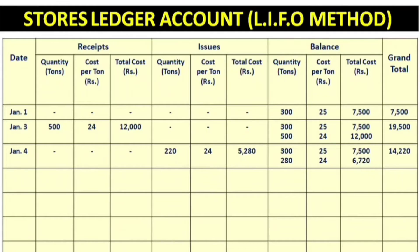For January 4th, we issue 220 tons. Under LIFO, we take from the most recent stock first — that is 500 tons at Rs.24. The issue is 220 tons at Rs.24, giving a total of Rs.5,280. For the remaining issue, 280 tons at Rs.24 equals Rs.6,720, giving a total of Rs.14,220 for that batch.